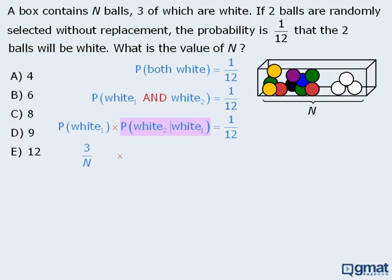Next we must find the probability of selecting a white ball on the second draw, given that a white ball is selected on the first draw. Well, let's see what happens when a white ball is selected on the first draw. When that happens, there are N minus 1 balls remaining, and two of them are white. So the probability of selecting a white ball on the second draw, given that a white ball is selected on the first draw, is equal to 2 over N minus 1.